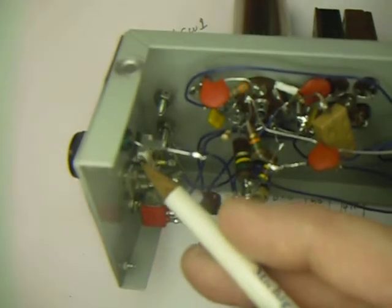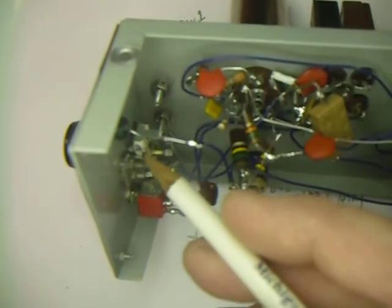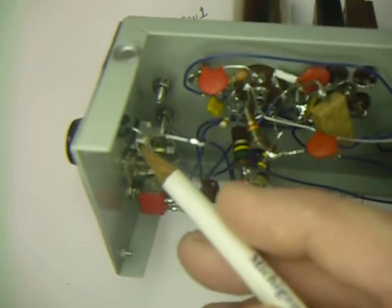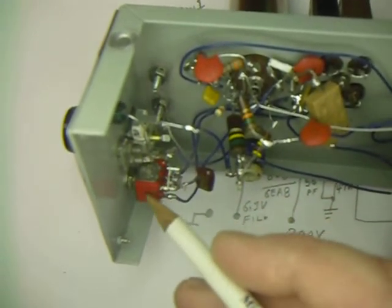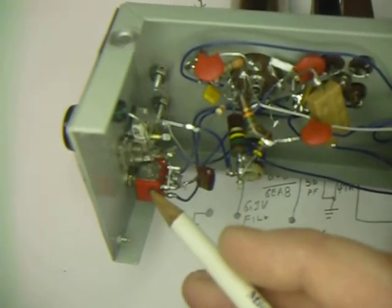The little trimmer is right there. That came out of a car radio and it's got a little shaft on the front, so I put a knob on it. This is the switch. We're switching into two crystals.